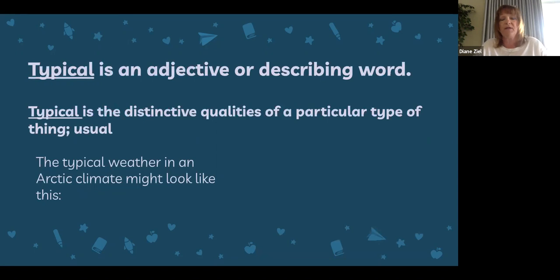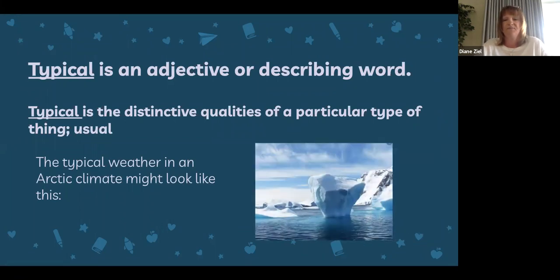Typical is an adjective, or describing word. Typical means the distinctive qualities of a particular type of thing — how it's usual. The typical weather in an Arctic climate might look like this: in other words, it's usually cold and icy. You won't see a warm, balmy beach day in the Arctic.